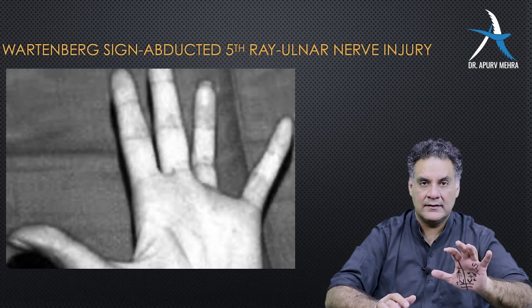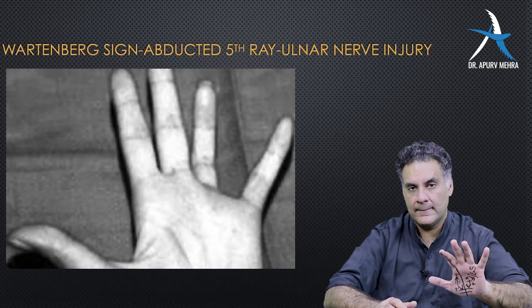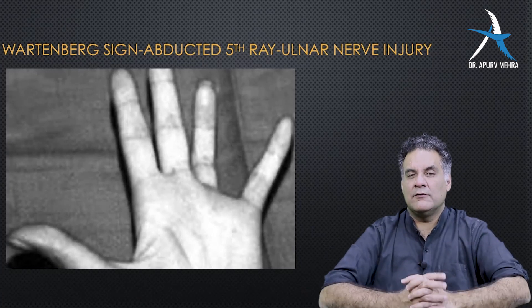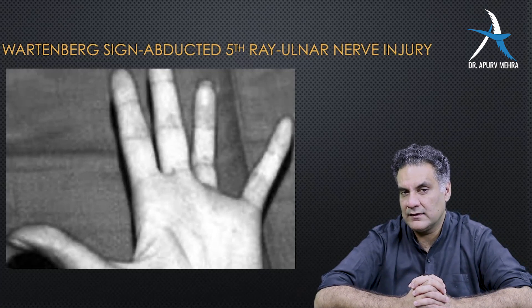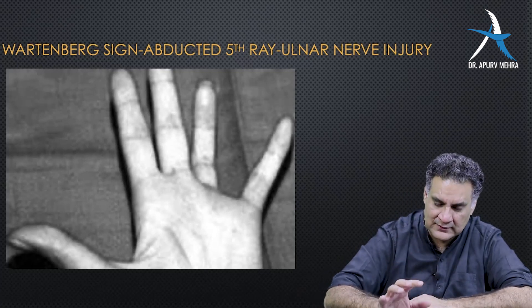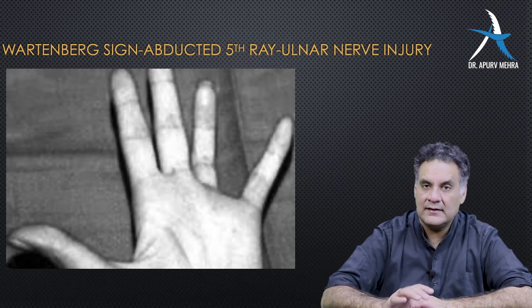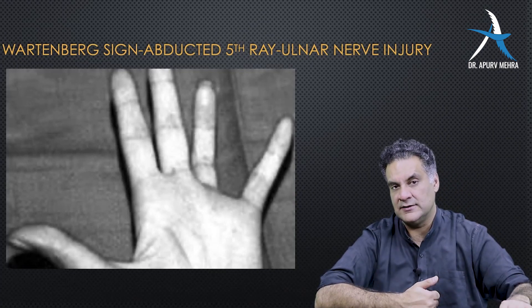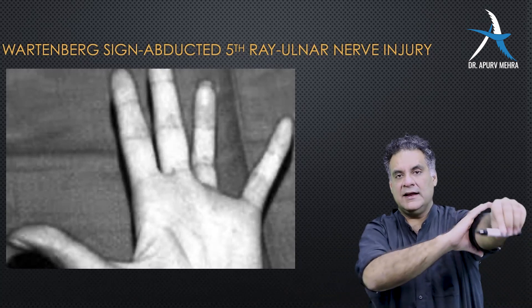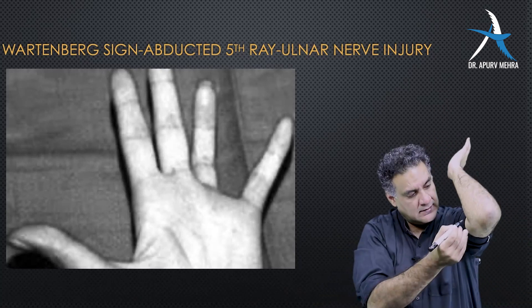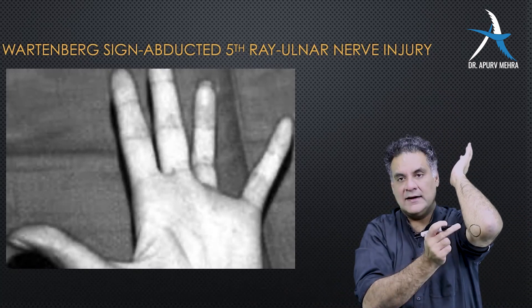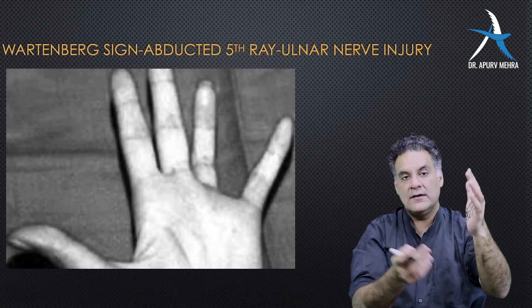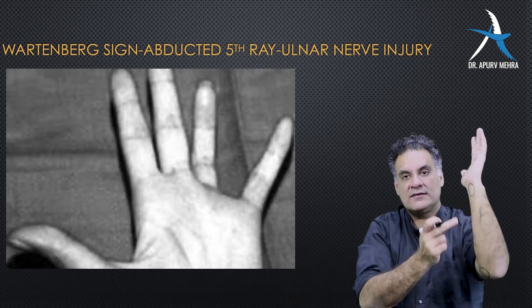When I look at the ulnar claw hand, I want to talk about the ulnar paradox. What exactly is ulnar paradox? Ulnar paradox means that the amount of clawing is dependent upon where the ulnar nerve got injured. You can have an ulnar nerve injury right around the elbow, behind the medial epicondyle where the ulnar nerve goes, or you can have an ulnar nerve injury right around the wrist.